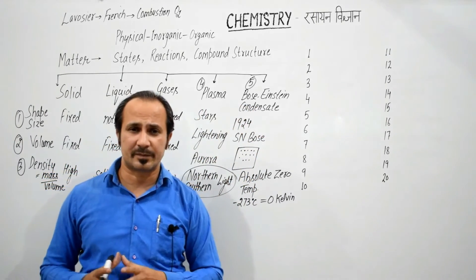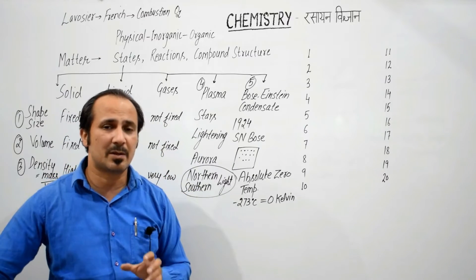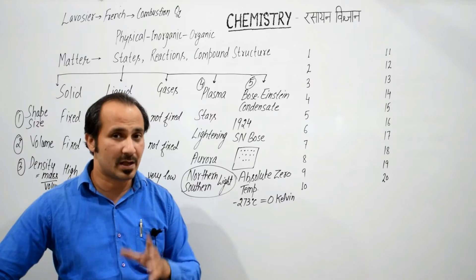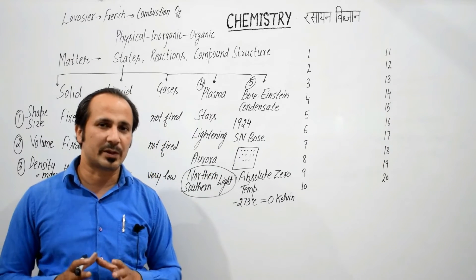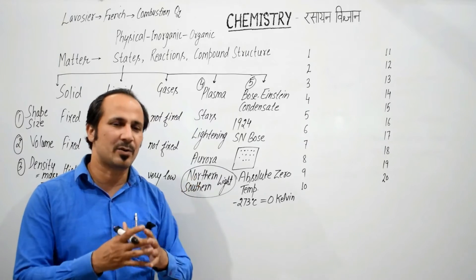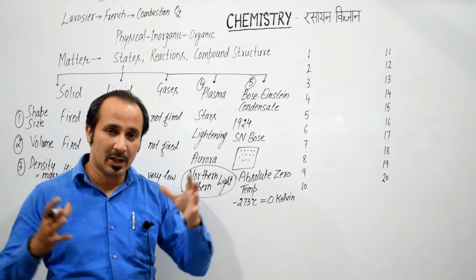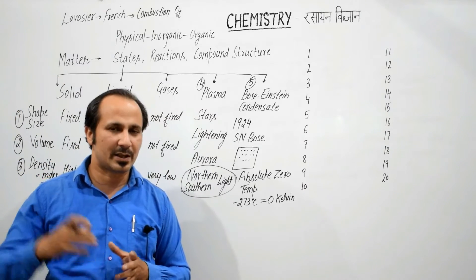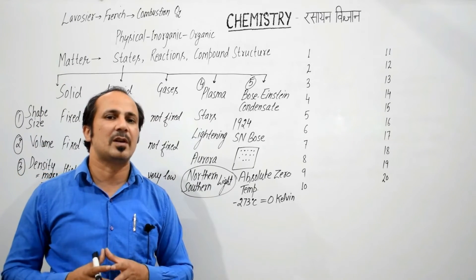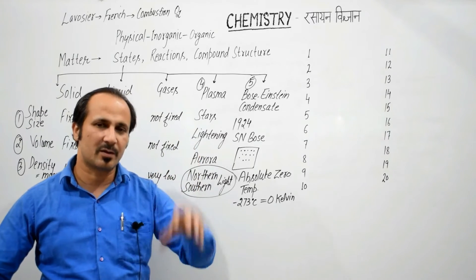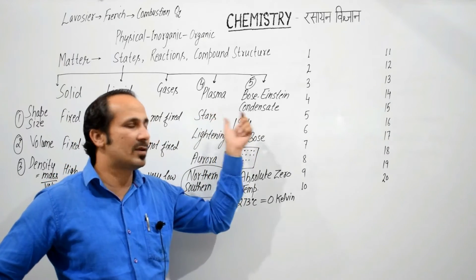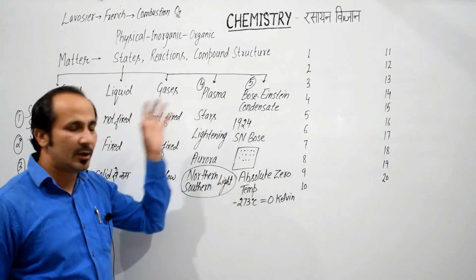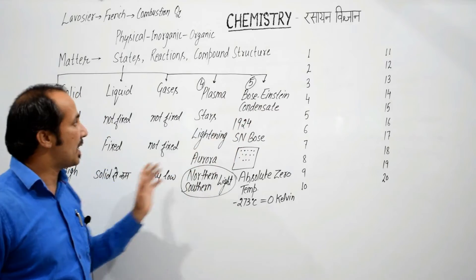Condensate एक word है जिसका हिंदी में मतलब होता है संगना. और जो बारिश होती है, वो भी condensation के कारण होती है — ये आपको पता होना चाहिए. क्योंकि water vapors जो होते हैं condensate होते रहते हैं, ठंडे होते रहते हैं क्योंकि ऊपर temperature कम हो जाता है. Condensation के कारण जो vapors होते हैं वो liquid में बन जाते हैं और फिर rain की रूप में नीचे आते हैं. Condensation वो process होती है जिसमें water vapors liquid में बदल जाते हैं.